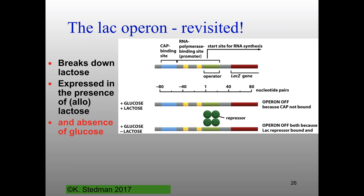We talked about the model system du jour — the lac operon. The lac operon has a number of important sites and is regulated by an operator site and a CAP binding site. In the promoter region, there is a downstream operator right where RNA synthesis is going to start. If you have high glucose and high lactose, the operon is off because you don't have the catabolite activator protein bound. The whole point of the lac operon is to express it only when you don't have enough energy from glucose but do have lactose to metabolize.